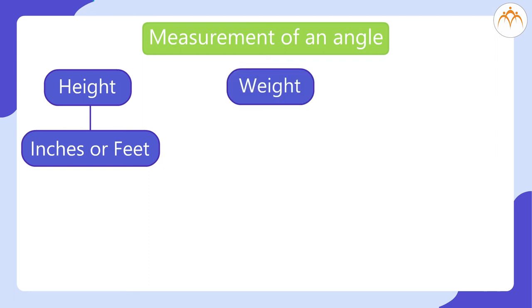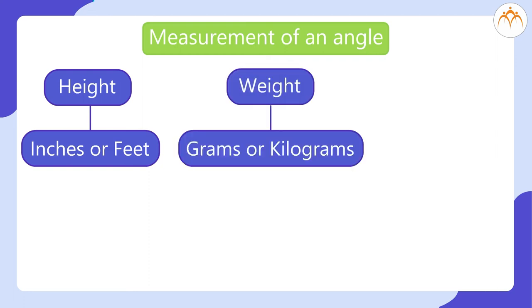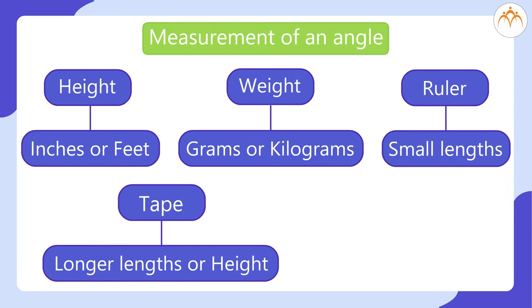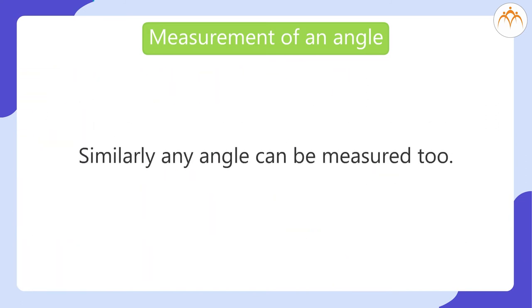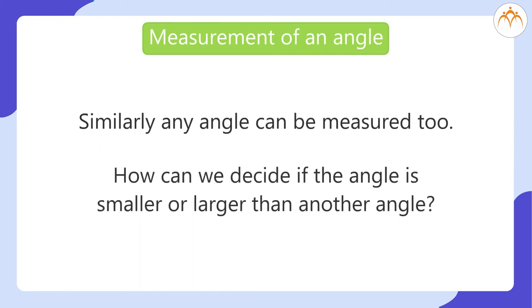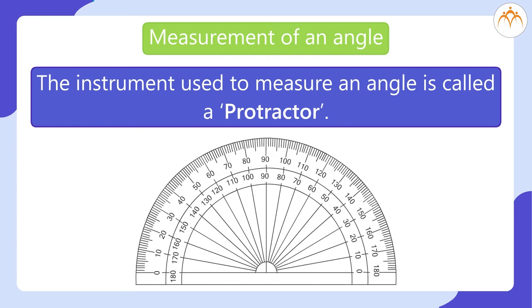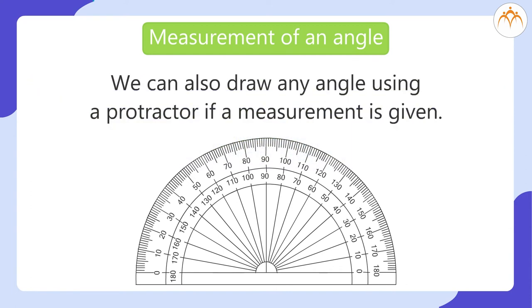Measurement of an angle. You know that we can measure height in inches or feet and weights in grams or kilograms. We use a ruler to measure small lengths, a tape to measure longer lengths or height, and we use a weighing scale to measure weight. Similarly, any angle can be measured too. How can we decide if the angle is smaller or larger than another angle? The instrument used to measure an angle is called as a protractor. The edge of a protractor is that of a semi-circular shape. We can also draw any angle using a protractor if a measurement is given.